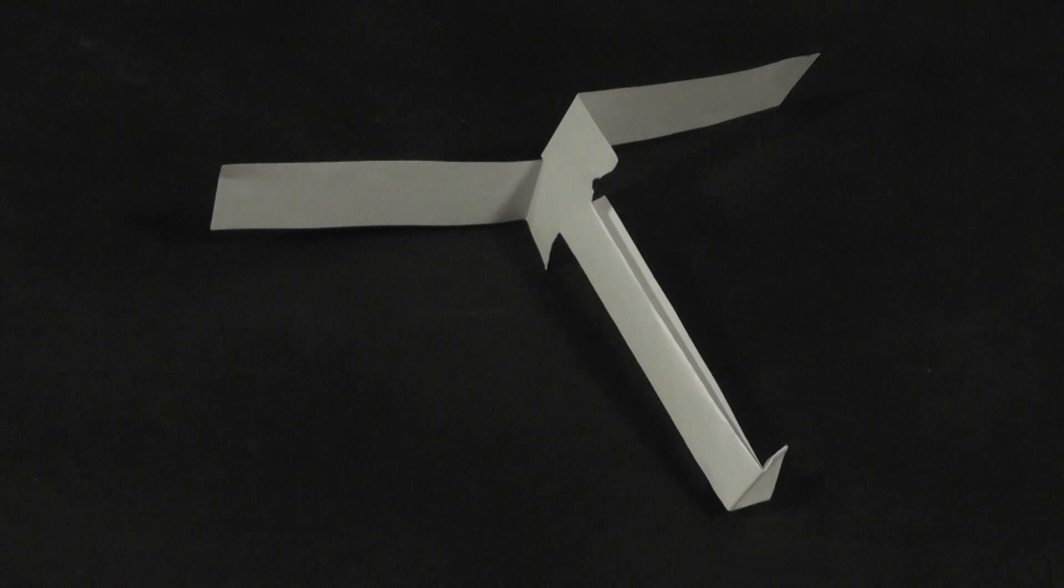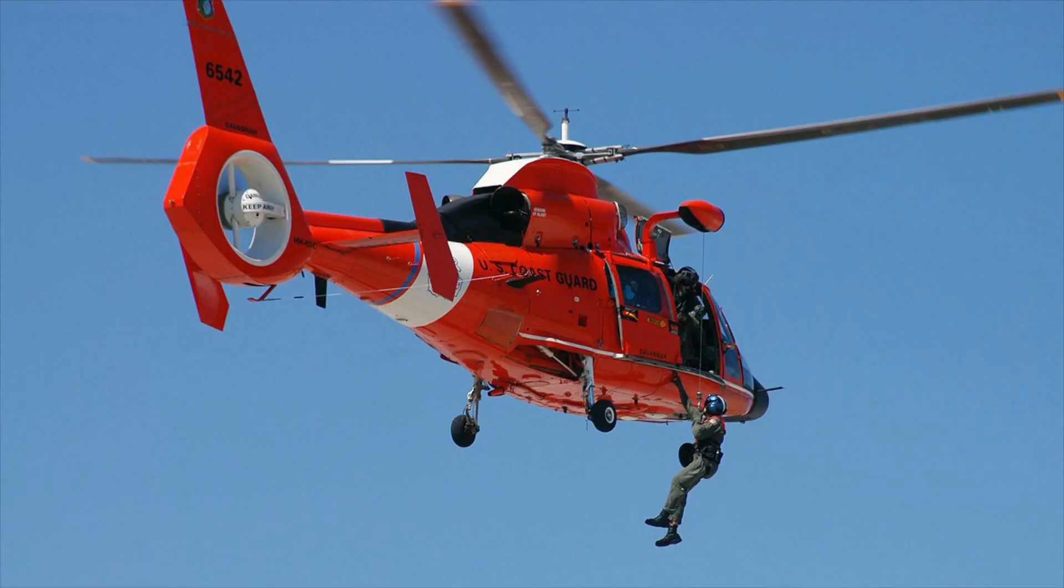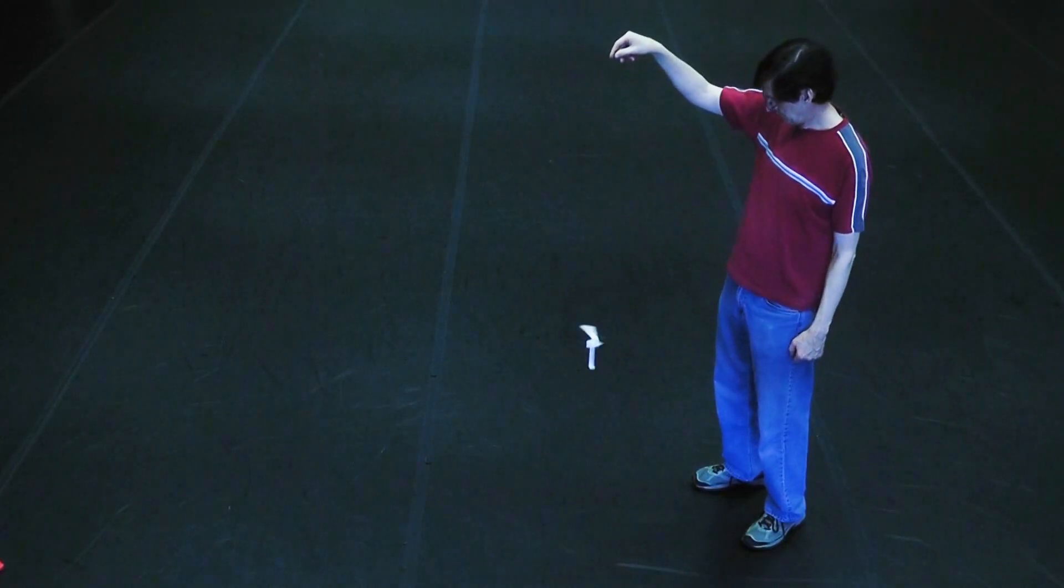The Whirlybird, entered by Richard New in the Second Great International Paper Airplane Contest in 1967, is one of the most famous paper aircraft in history. The Whirlybird is not a true helicopter, because it does not have a powered rotor to hover and climb. It is a vertically descending autogyro.